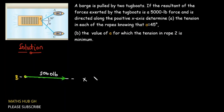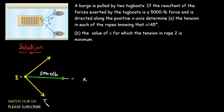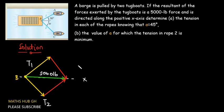Now let's draw the force vectors for the tension in the two ropes. This is T1, representing the tension in the first tugboat, and this represents the tension in the second tugboat, which is T2. I'm going to draw another vector parallel to T1, and another vector parallel to T2, so at the end you'll have a parallelogram shape. This also becomes T2, and this also becomes T1.